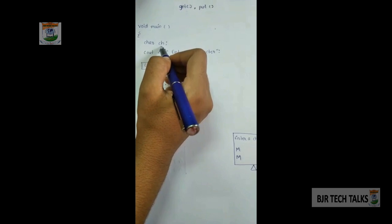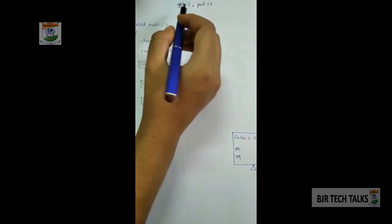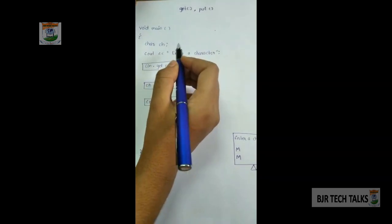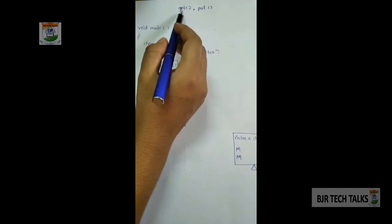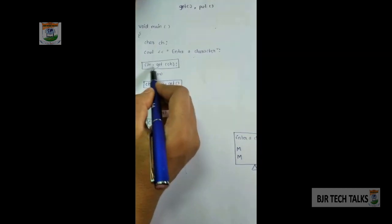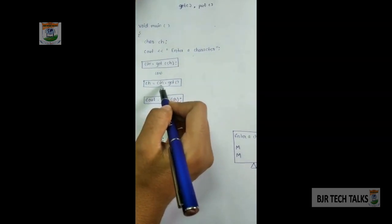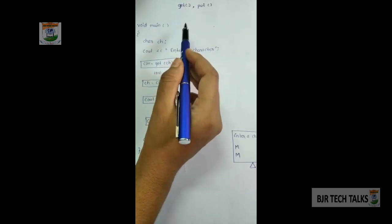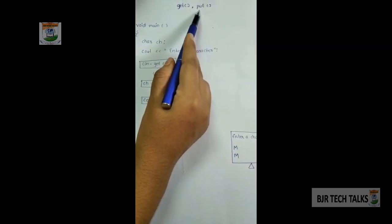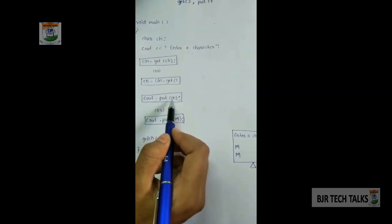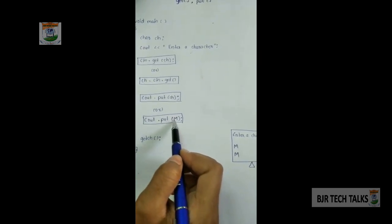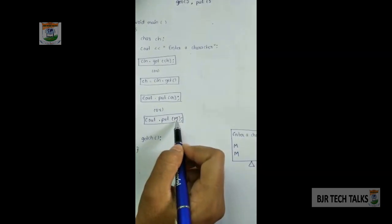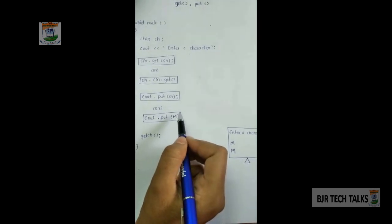In this example program, void main is declared and character ch is the data member, because get and put functions only work with character type values. We output a prompt: 'Enter a character.' The get function can be used in two ways: cin.get(ch) or ch = cin.get(). The get function is associated with cin because it is a member function of istream class, which takes only input data. Similarly, the put function can be used in two ways: cout.put(ch) or cout.put('m'), where m is a character value.